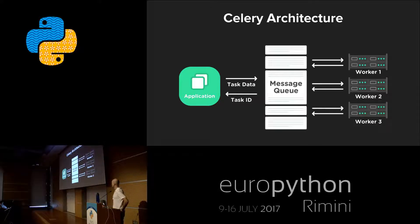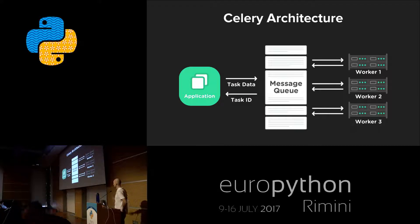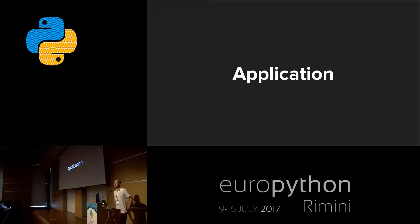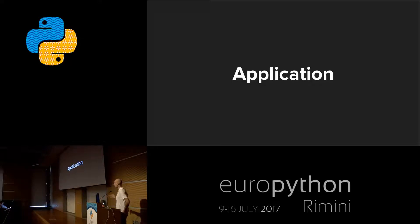This is an exemplary Celery architecture. We have an application, a message queue, and one or more workers. This is the basic Celery architecture — we don't care about the result database yet; this is the simplest possible implementation. The application is our main application — in this case, our view controller function. This is the part that wants to outsource some of its tasks to someone else. It can be a website or any kind of project.